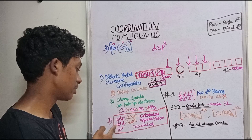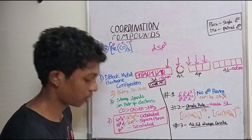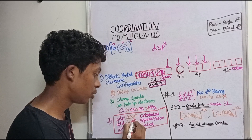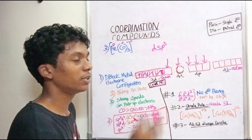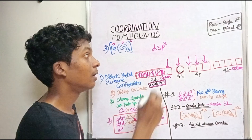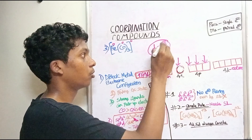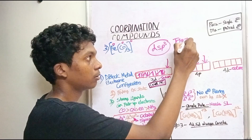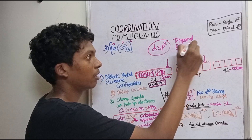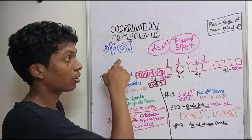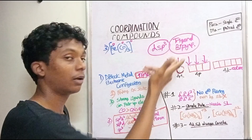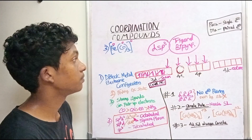dsp³ is not square planar — it is dsp³, which corresponds to Trigonal Bipyramidal geometry. FeCO₅ is a carbonyl compound and is a very unique structure. dsp³ gives Trigonal Bipyramidal geometry.